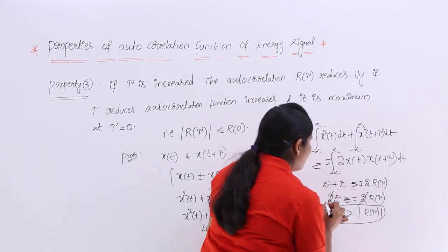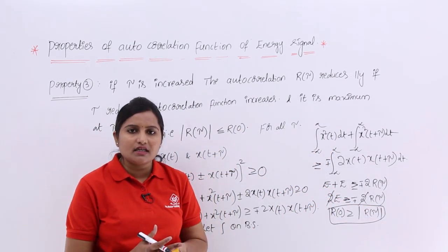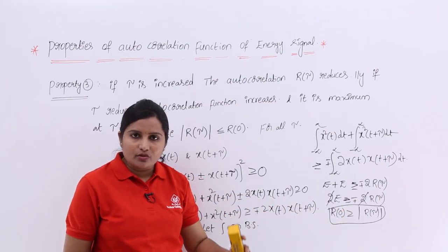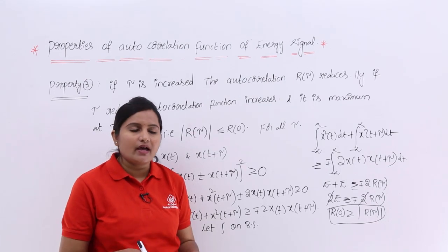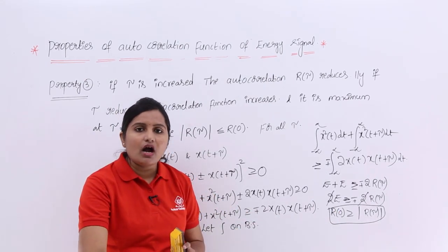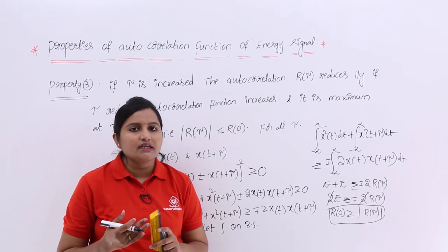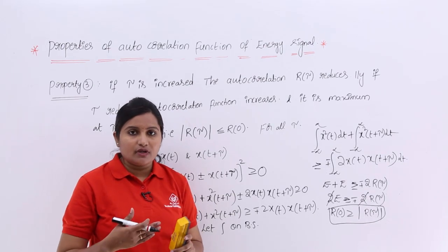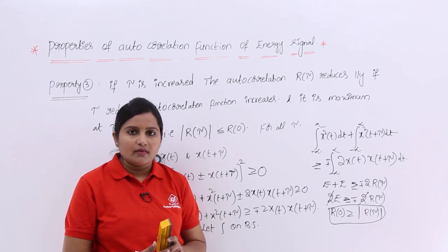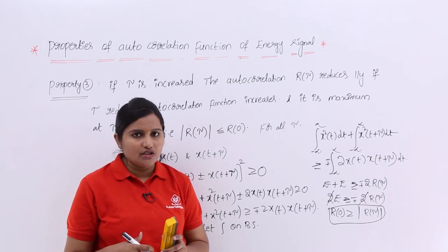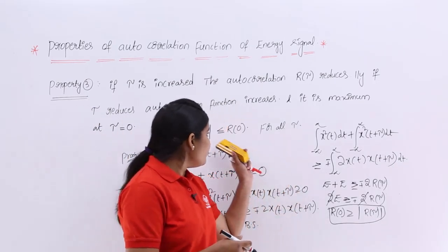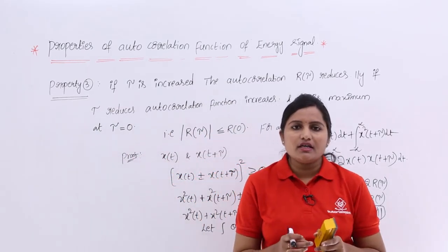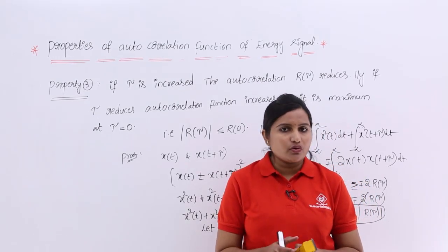By this we have proved the property: the autocorrelation function at tau = 0 gives the maximum value. In all other cases, the autocorrelation function gives a lesser value compared to R(0). Increasing tau decreases the autocorrelation function; decreasing tau increases it. The final and very important statement is: the modulus of R(tau) is always less than or equal to R(0), which is the maximum autocorrelation function value.